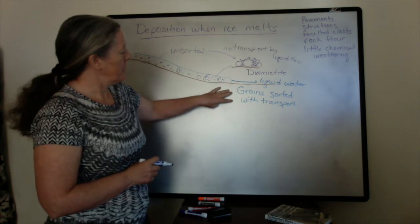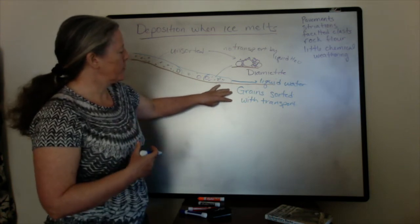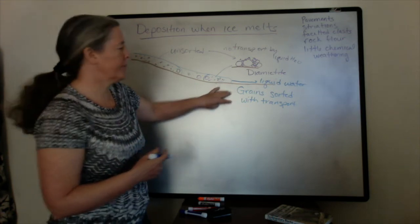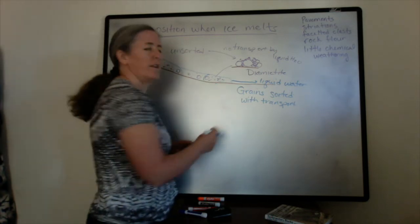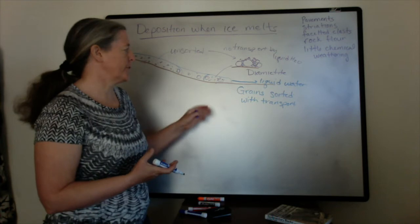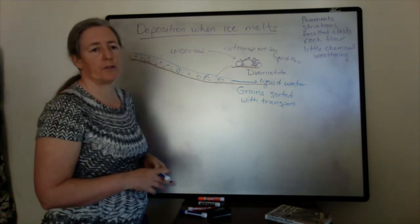A little bit later in the quarter, we're going to be talking about rivers, and often the rivers that are associated with this end up being braided rivers because there's a very large number of large clasts. So just keep in mind that braided rivers are very common at the toe of glaciers.